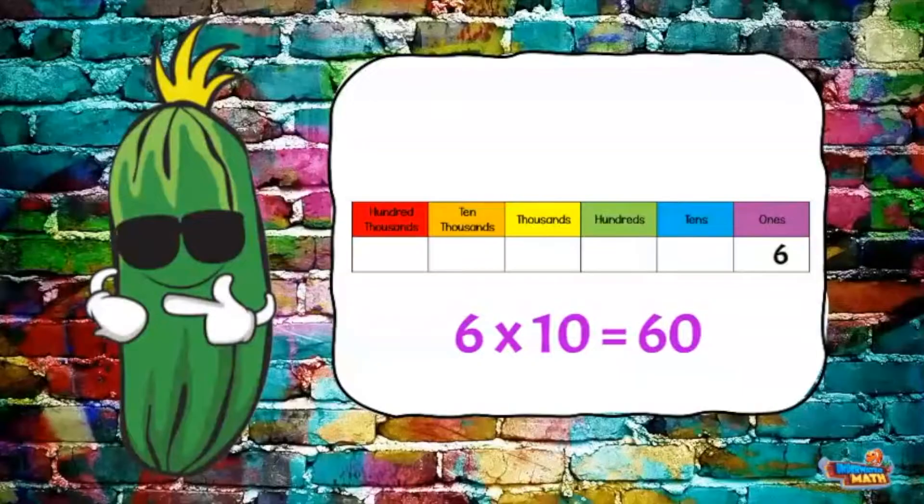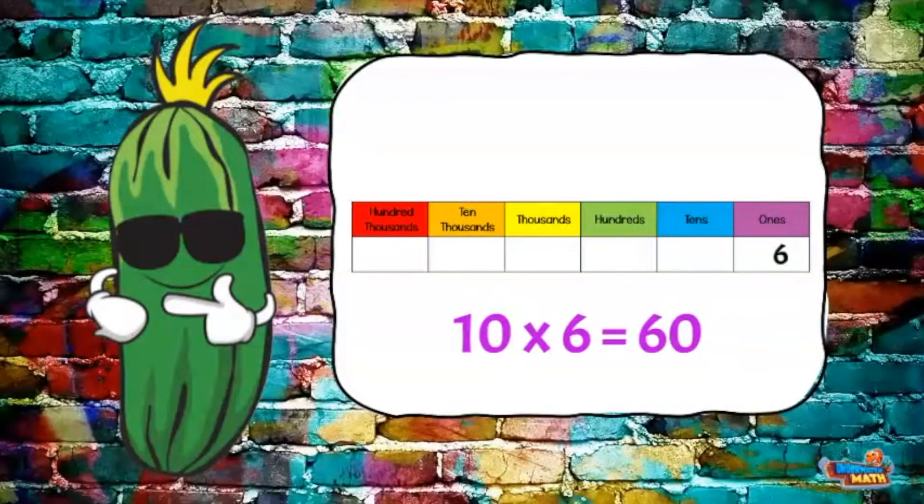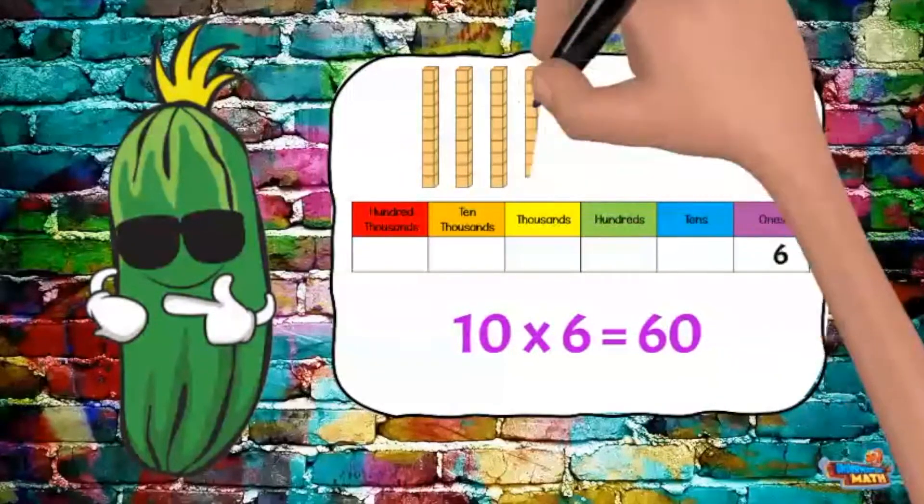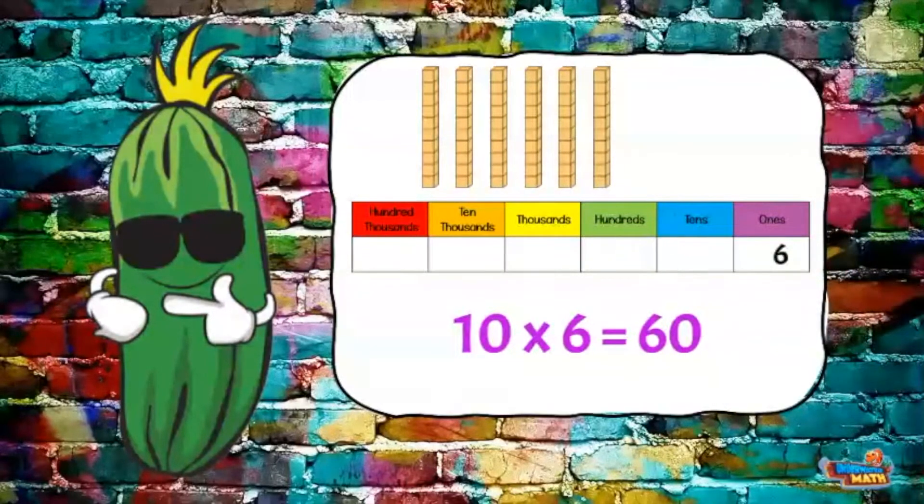Here's how. The expression is 6 times 10. I can flip the numbers around to have 10 times 6. This means I have 6 tens, or 60. I move the 6 over one place value to the left and add a zero to the empty place values to the right. This gives me the same answer of 60.